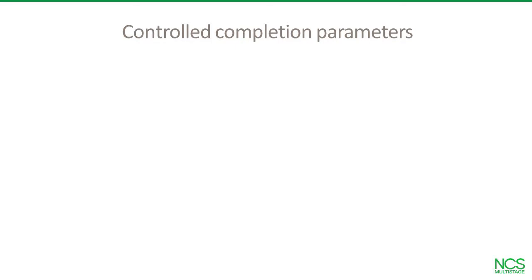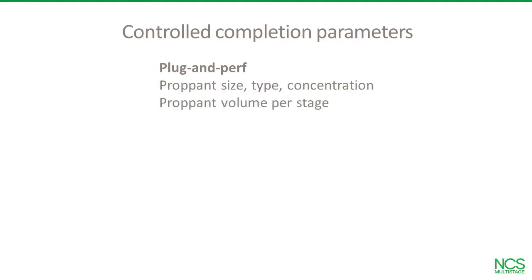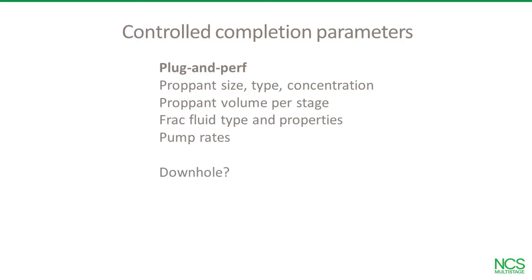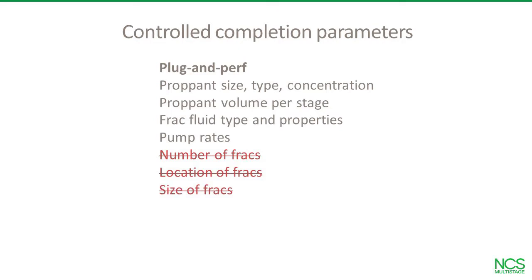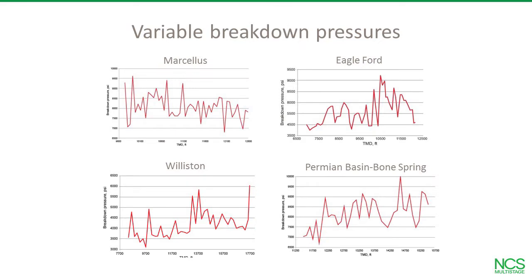To optimize a completion design, you have to control critical parameters from one well to the next. Here's what you can control with plug-and-perf: the proppant — how much proppant is pumped at each stage — frack fluid design, and the pumping schedule. Unfortunately, you have little or no control over what happens downhole where the completion touches the rock.